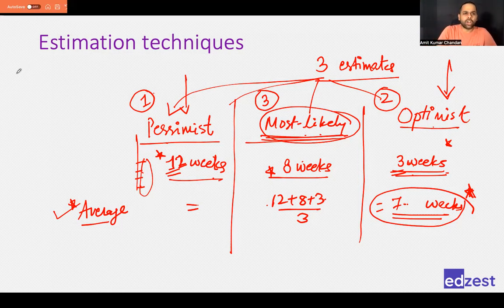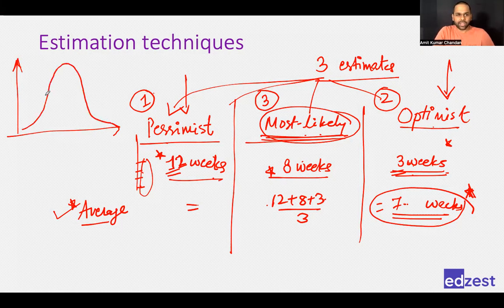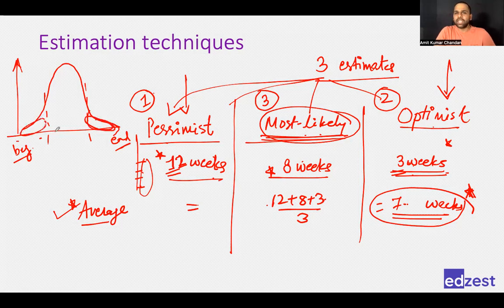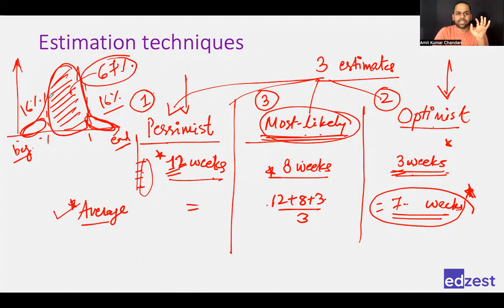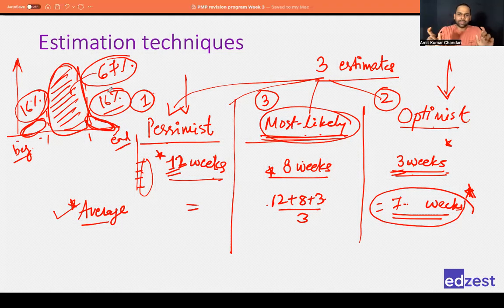We need to give more weightage to the most likely estimate. Through a normal distribution curve, you can see that very little data is at the extremes and maximum data is towards the middle — approximately 67% is the most likely view, 16% is pessimistic, and 16% is optimistic. For example, if you take the height of every person in your city, about 70% of men fall between 5'5" and 5'10", with only 16% above and 16% below.